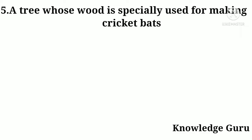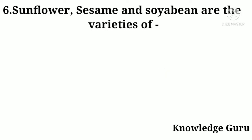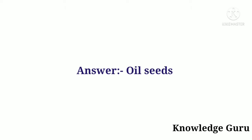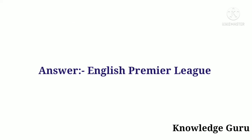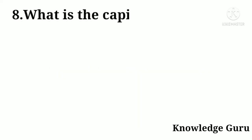Question number five: a tree whose wood is especially used for making cricket bats. Answer: willow. Question number six: sunflower, sesame, and soya bean are the varieties of what? Answer: oil seeds.